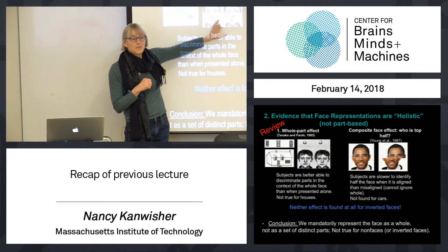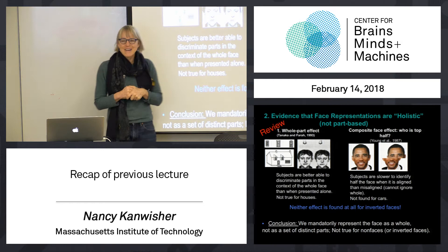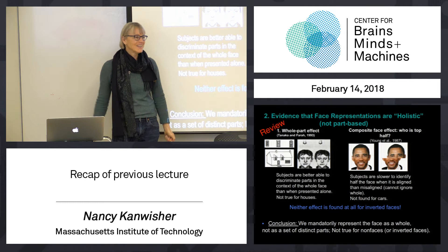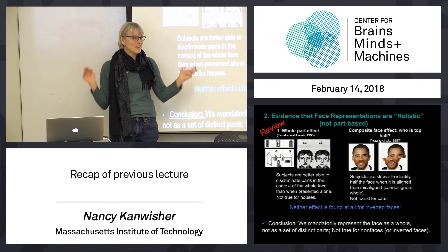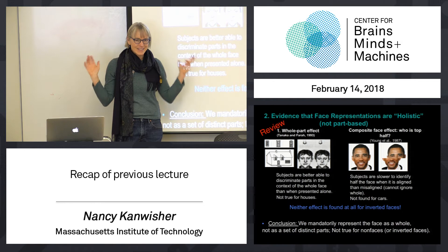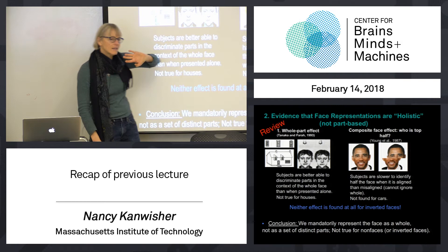We showed that was true for faces but not houses, though we worried those stimuli were so different from each other — but that was what you could do in 1993. Then I showed the beautiful solution to this experimental design problem: you test inverted faces. They're just like faces as stimuli, with all the same visual properties, but they're not processed the same way. And this part-whole effect does not happen for inverted faces. That tells us this is what's distinctive about faces — it's really about faces, not about it being a grayscale image or something like that.